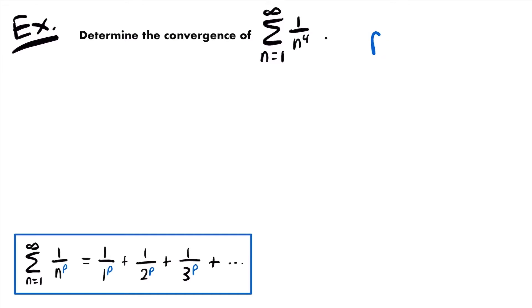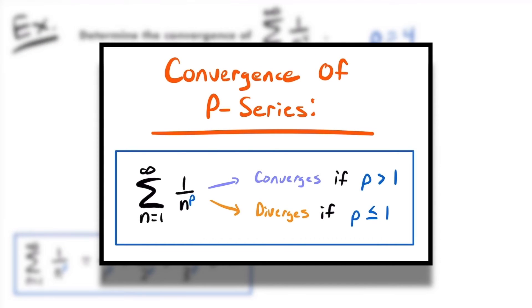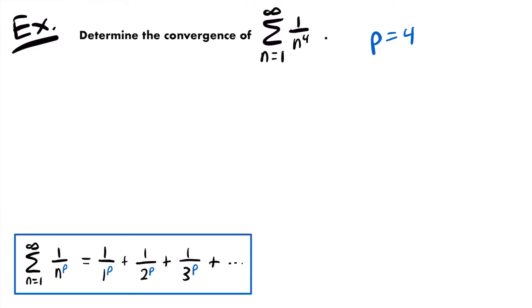So what does p=4 tell us about the convergence of this p-series? The convergence of a p-series is based on the value of p: it will converge if p is greater than 1, but it will diverge if p is less than or equal to 1. For this example, p is equal to 4, and that is greater than 1, which means that this p-series will converge.